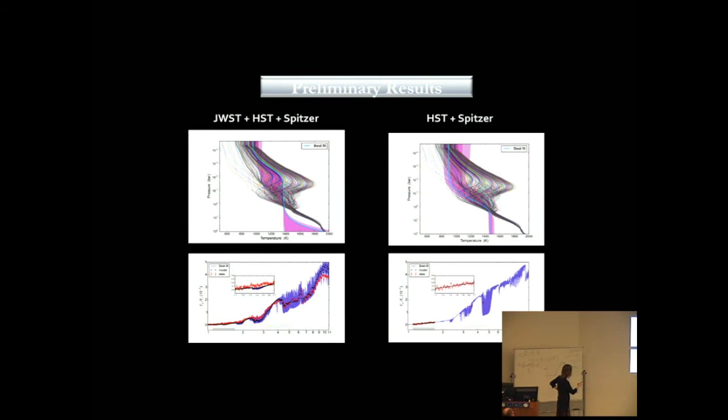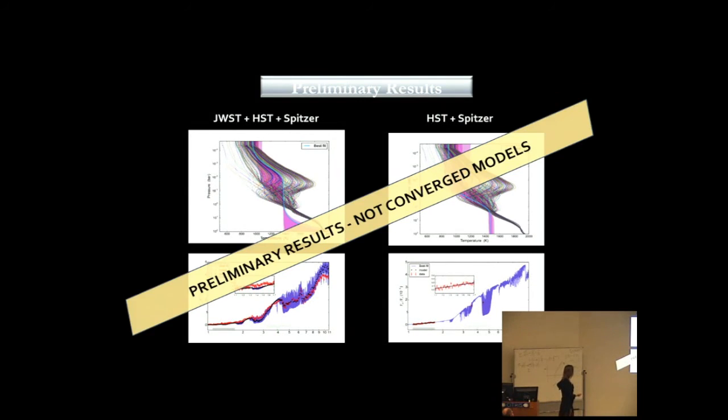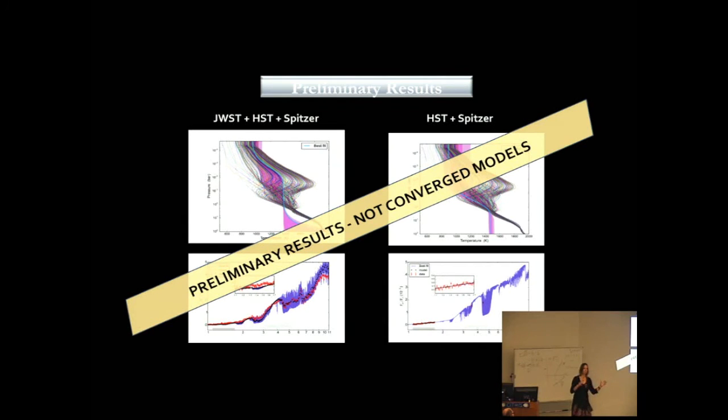What you can see here is that with JWST data, we could catch some kind of thermal inversion here, but with HST and Spitzer data, we don't even see inversion. We are going to explore this more. This is just a recent project. We want to do a different kind of averages of this TP profile and see which of the TP profile actually corresponds to the retrieved TP profile. Thank you.